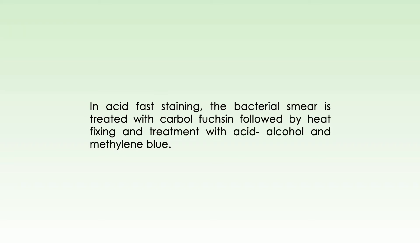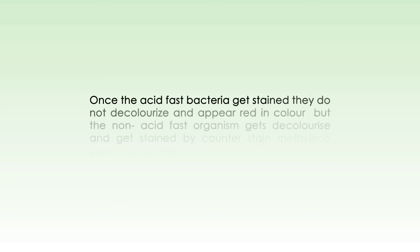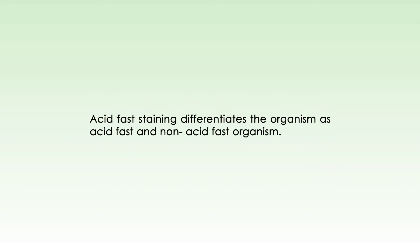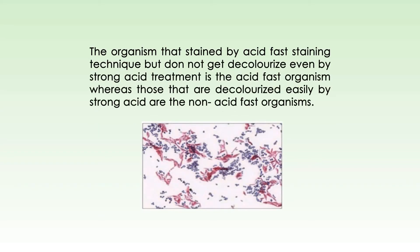In acid-fast staining, the bacterial smear is treated with carbol fuchsin, followed by heat fixing and treatment with acid alcohol and methylene blue. Once the acid-fast bacteria get stained, they do not decolorize and appear red in color. Non-acid-fast organisms get decolorized and get stained by the counter stain methylene blue, appearing blue in color. Acid-fast staining differentiates organisms as acid-fast and non-acid-fast. The organisms that do not get decolorized even by strong acid treatment are the acid-fast organisms, whereas those that are easily decolorized are the non-acid-fast organisms.